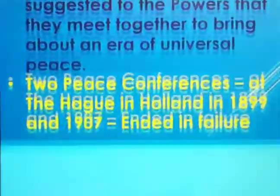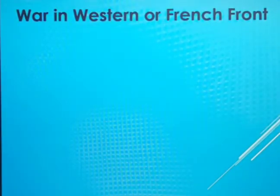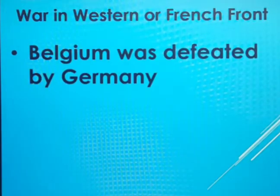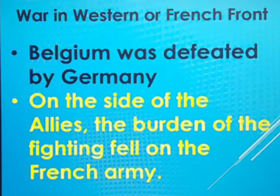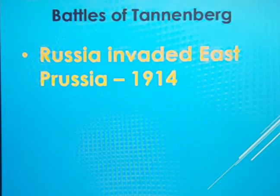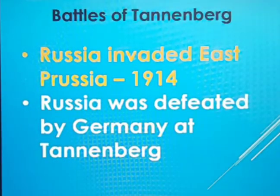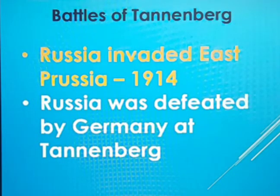Next, war on the western front or French front. On the western side, Belgium was defeated by Germany. On the side of the Allies, the burden of fighting fell on the French army. Within nine months, Paris seemed almost doomed. Next is the Battle of Tannenberg and Marne. In the year 1914, Russia invaded East Prussia. Russia was defeated by Germany at the place of Tannenberg, and this was a great destruction. This was a great alert for France, which wanted to protect Paris from Germany.